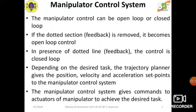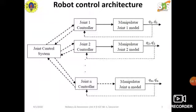The Manipulator Control System can be of open type or closed type. If there is a feedback system, we call it closed loop; if there is no feedback, we call it an open loop control system. If there are multiple joints in a robot, then we need a master joint control system, which provides the necessary set points for each and every joint.